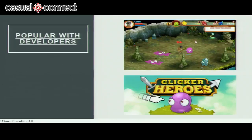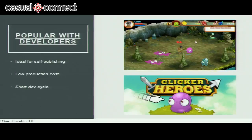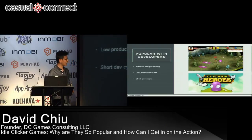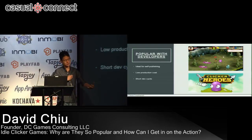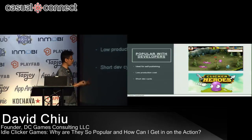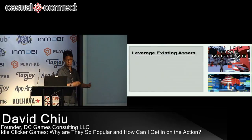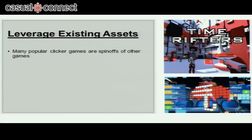Taking publishers out of the equation, these games are ideal for self-publishing developers because they usually have much lower production costs and shorter development cycles — you can make a game in a matter of months. For example, the first iteration of Clicker Heroes was made in about a month. Developer Playsaurus had previously made a game called Cloudstone, which wasn't a big success, and they took characters and art assets from it and quickly made Clicker Heroes, which became a worldwide phenomenon. Leveraging existing assets from another game is a great way to make an idle game.